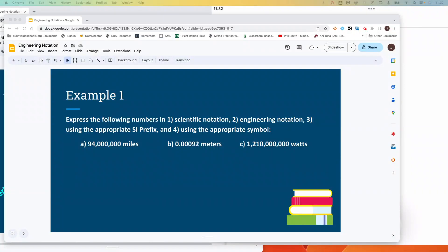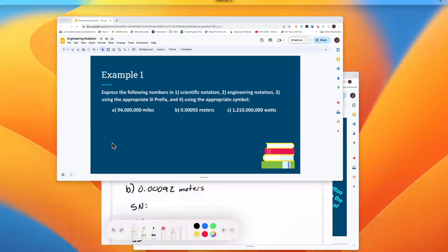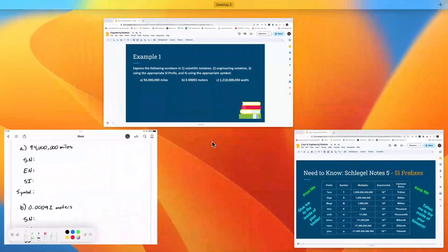For example, when we are going to express the following numbers in scientific notation, engineering notation, using the appropriate SI prefix, and using the appropriate symbol, we're going to have four different ways of saying these numbers by the time we are done with this example for each of these numbers.